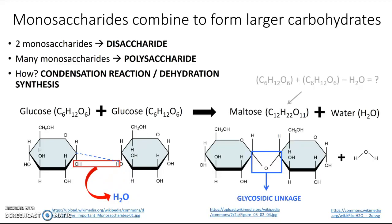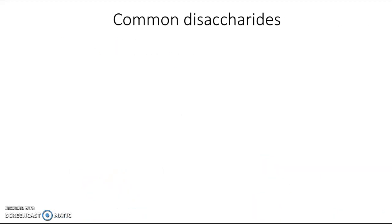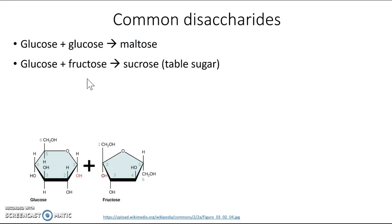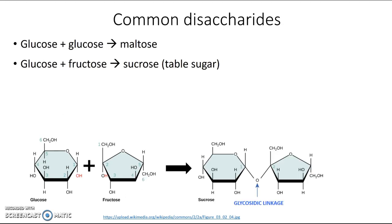There are many different disaccharides. Maltose is made by combining glucose and glucose, as we just saw. Sucrose is made by combining glucose and fructose. Here's a glucose molecule, here's fructose — put them together and we get sucrose, with another glycosidic linkage and a molecule of water released. Sucrose is that table sugar mentioned earlier — what you actually buy at the grocery store in a bag of sugar or sugar cubes.